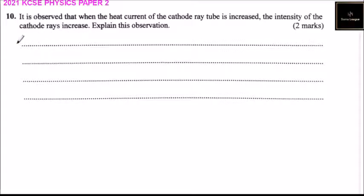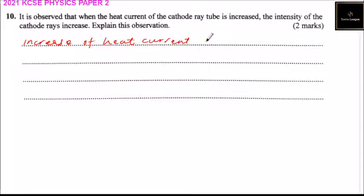Explain this observation. We say that increase in current increases the energy. So increase of heat current increases the energy of electrons.